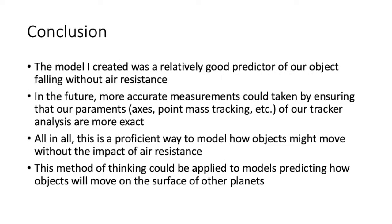In conclusion, the model I created was a relatively good predictor of our object falling without air resistance. In the future, more accurate measurements could be taken by ensuring that our parameters — for example, our axes, our point mass tracking, and other things within our tracker analysis — could be more exact. All in all, this is a proficient way to model how objects might move without the impact of air resistance, and this method of thinking could be applied to models predicting how objects will move on the surface of other planets.